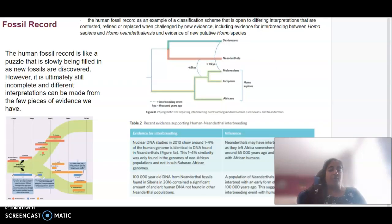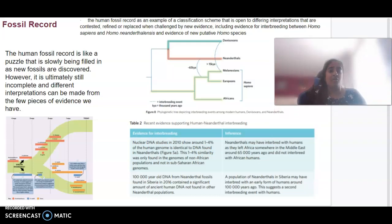If we look at the fossil record, the human fossil record is an example of a classification scheme. It's open to differing opinions and interpretations when it is challenged by new evidence. But we can definitely look at the different evidence that has been found over time. There's the relationship between the Denisovans and the Neanderthals. At some point, there's been evidence collected that shows they once had a common ancestor and evidence that shows they may have been interbreeding. The human fossil record is like a puzzle being slowly filled. There are different interpretations being made from the evidence that we do have.